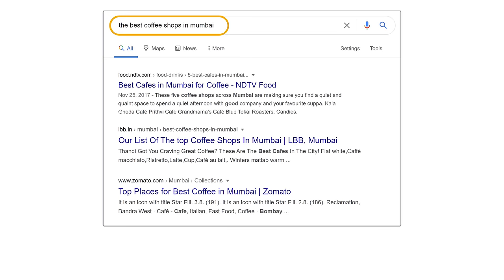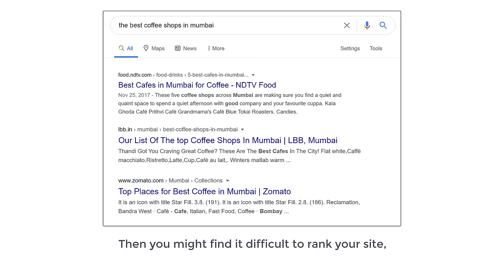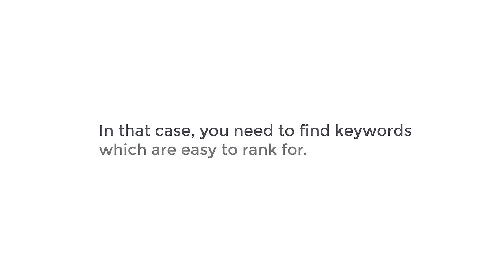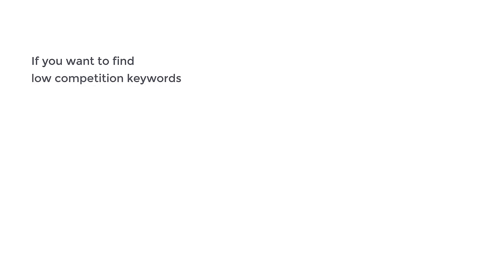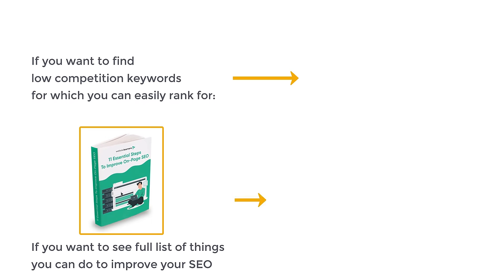So that's it guys — this is how you can optimize your website on Google and make it appear on the Google search results. Now if you choose a search term for which the competitor's content is already very good, you'll find it difficult to rank for those terms. In that case, you need to find keywords which are easy to rank for. If you want to find low competition keywords you can easily rank for, you can watch this video. If you want to see a full list of things you can do to improve your SEO, you can download our SEO checklist guide by clicking here.